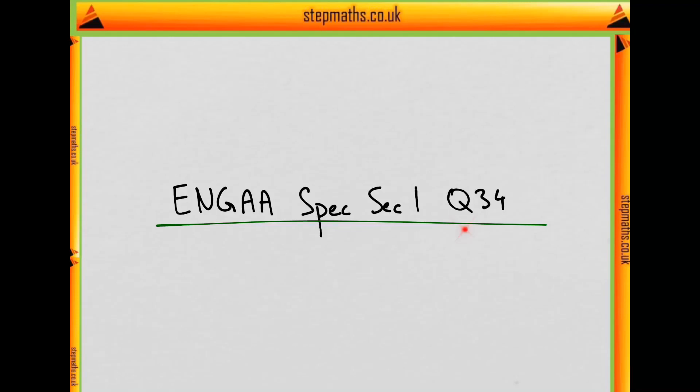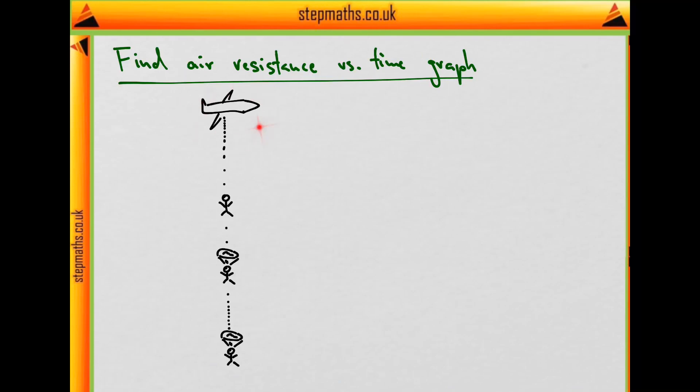In this video we're going to look at question 34 from the specimen paper. A parachutist jumps out of an airplane and a few seconds later they open their parachute to slow down a bit before they hit the ground. Our task is to pick a graph of air resistance against time from five plots given in the question.